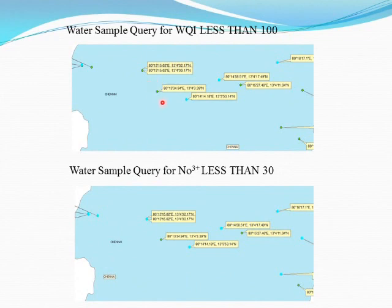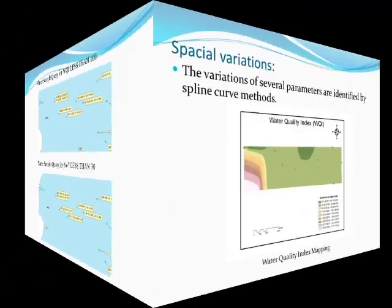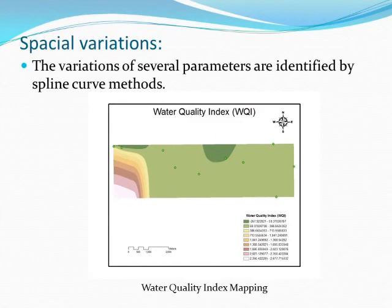The green represents the geological coordinates that are installed in the software. The blue is the query final result — we can perform queries for all the chemical parameters for values less than the permissible limit and acceptable range. This is the spatial variation of the water quality index.